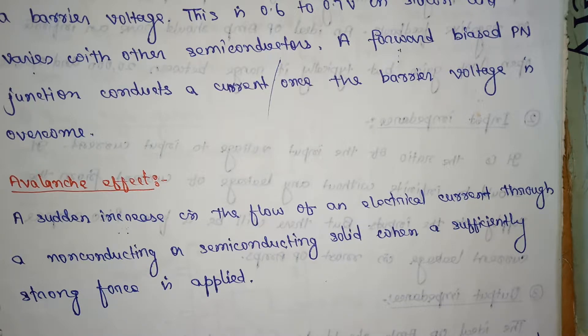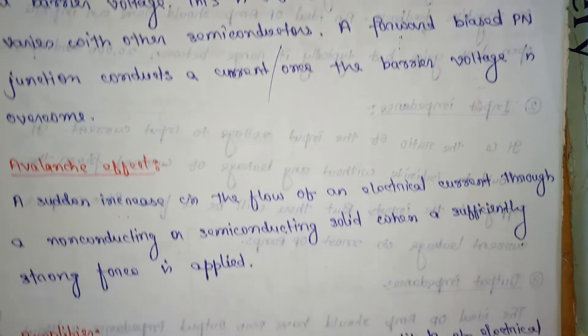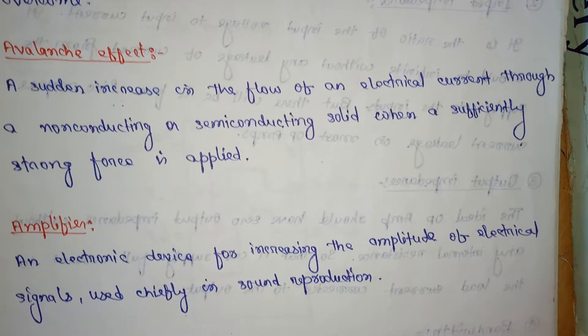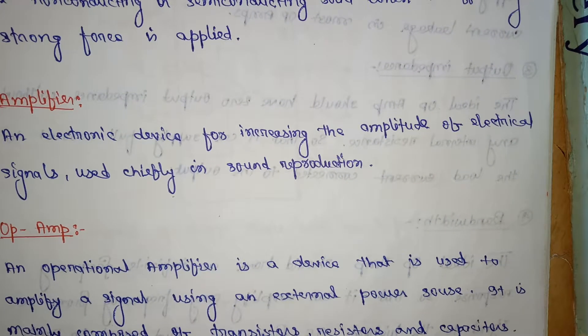Next, what is amplifier? An electronic device for increasing the amplitude of electrical signals used chiefly in sound reproduction. Next, what is op-amp?